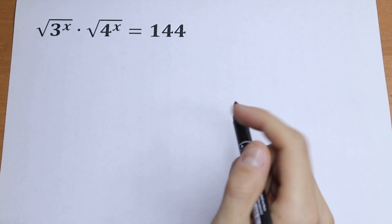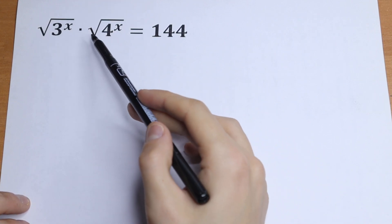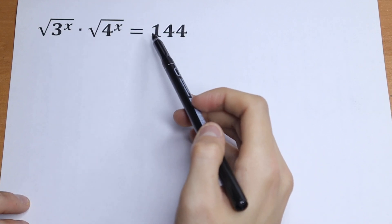Hello everyone, welcome back to Maths Mood. Here we have an interesting exponential equation: square root of 3 to the power x times square root of 4 to the power x equal to 144.